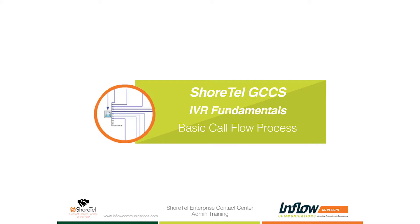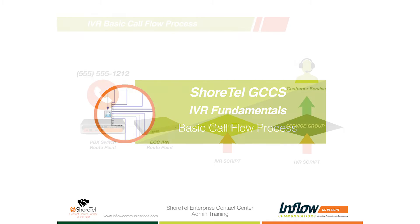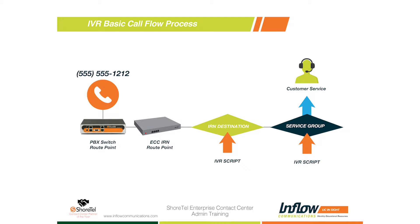Let's talk about the basic call flow process. This is really going to address how the pieces fit together so that you have an idea of the flow process and where you can actually use IVR. So in the basic flow process, when a caller calls in, the first place that call hits is going to be a ShorTel switch, and in that switch will be a route point. A route point simply tells the call — or controls the call — where it goes next.